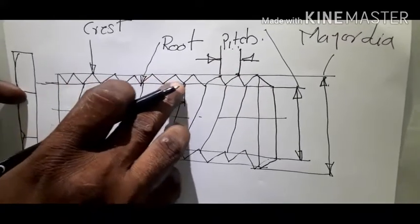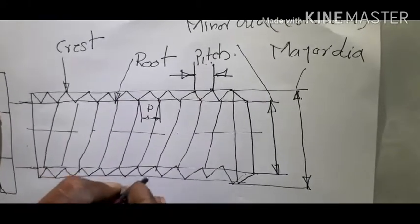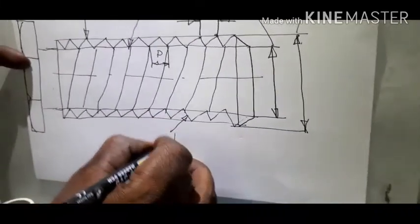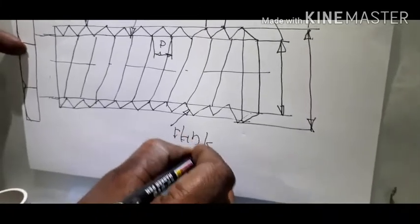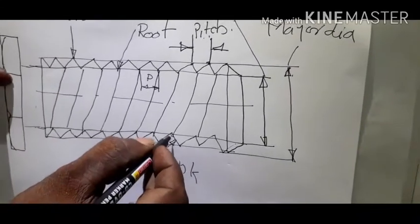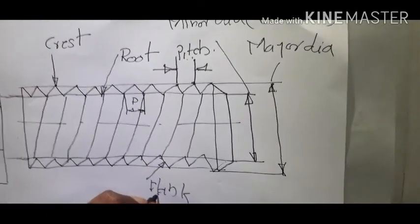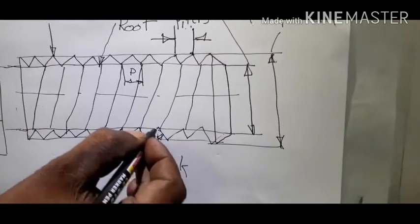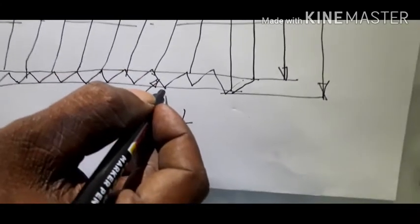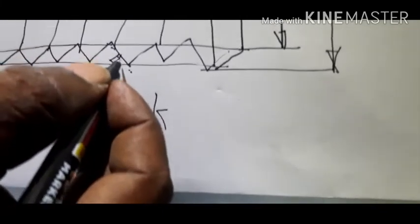Now we move on to another part: this is called flank. In between the root and the crest, there is a slanting surface. This slanting surface is called flank. Flank is a slanting surface on a thread that lies in between the crest and the root.